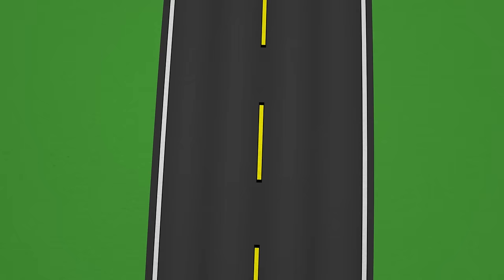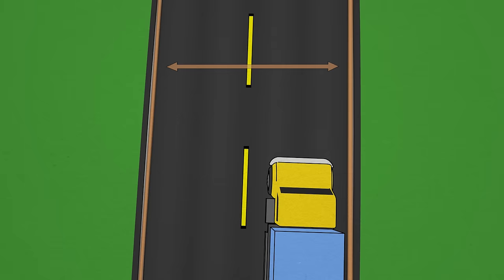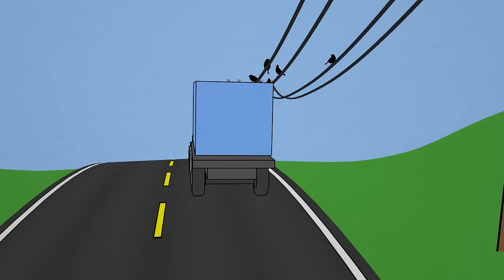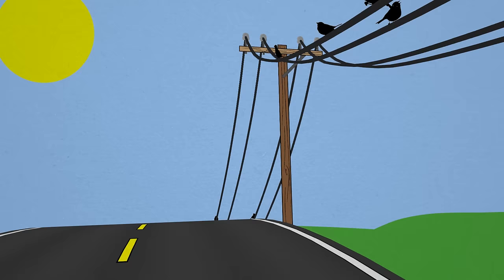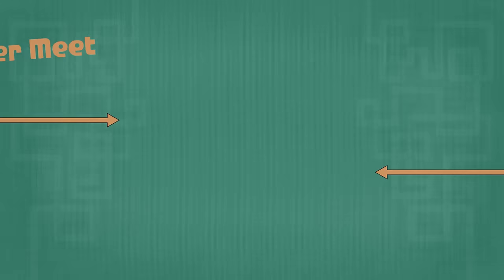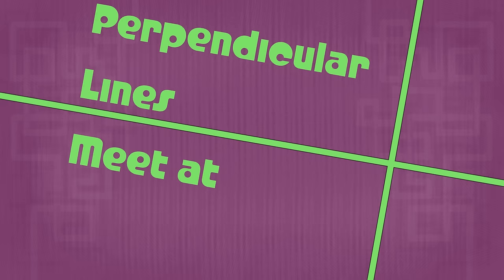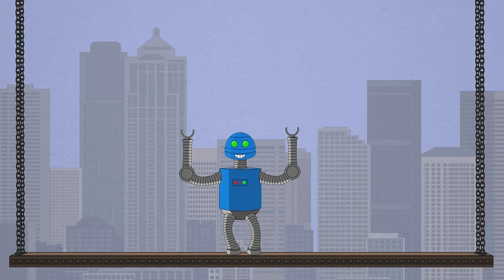When two lines will never touch, then you can tell that those two lines are parallel — like these telephone wires up above the street. Parallel lines will never meet. Parallel lines never meet. Intersecting lines make feast. Perpendicular lines meet at 90 degrees. Put your hands in the air with me.